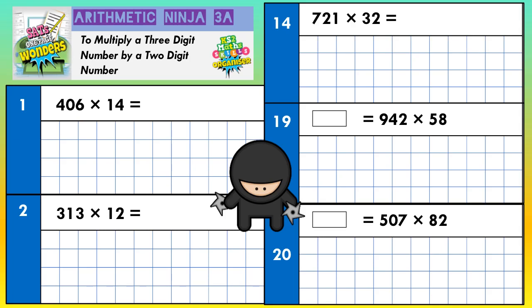Welcome arithmetic ninjas to multiplying a three-digit number by a two-digit number — some people call this long multiplication. Some people use a method called the magic zero method, so let's take a closer look.